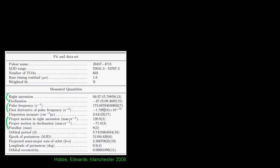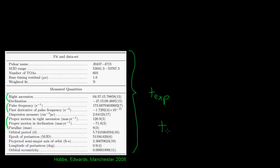Many of these quantities are measured to extremely high accuracy — for example, we know the pulse frequency to 13 significant digits. So these are really some of the most precise measurements made in all of astronomy. Using all of these terms together allows us to calculate the expected arrival time of each pulse, giving us T-expected. Then we actually observe the pulsar with our radio telescope and measure the time the pulse actually does arrive — T-observed. When we take the difference, T-observed minus T-expected, we get the timing residual.